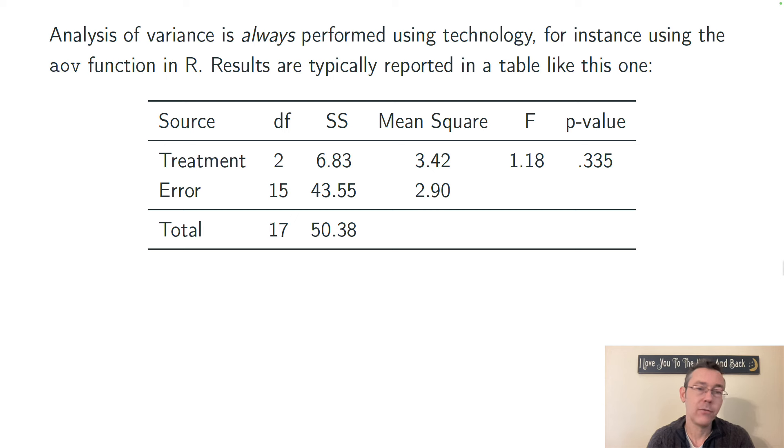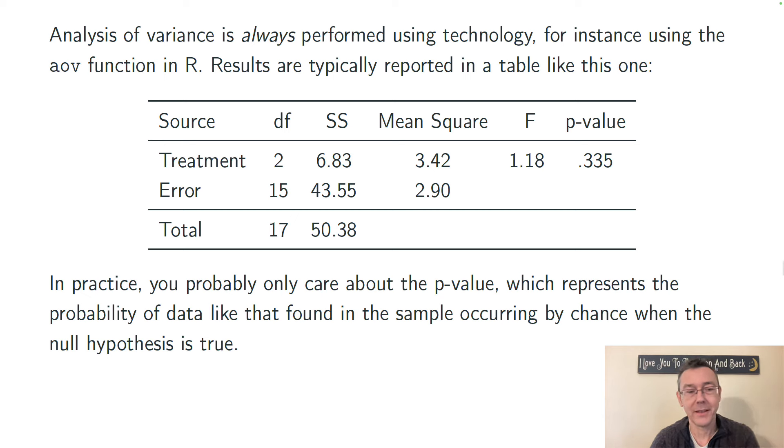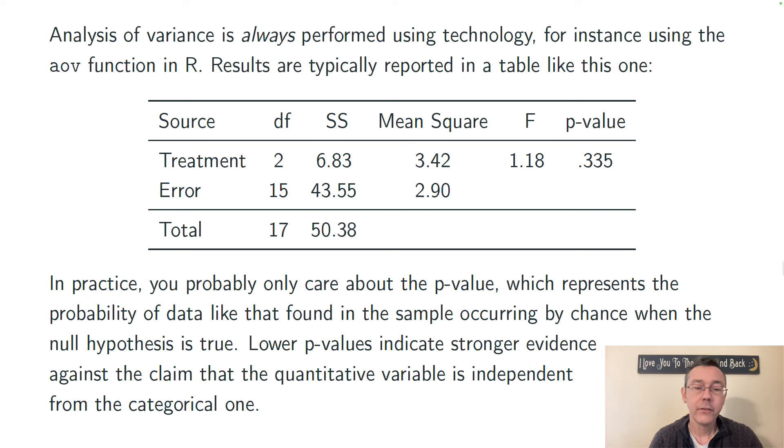And in that longer, more mathy video, I talk about what these things mean a bit more specifically. In practice, the only one you're going to care about is going to be the p-value at the end. And this is representing the probability of data like what you got in your sample occurring, by chance, when the null hypothesis is true. That is, when in the larger population, the means are the same in each of the different groups. In this case, we have a p-value of 0.335. P-values are always going to be between 0 and 1. Lower p-values indicate stronger evidence against the null hypothesis. That is, against the claim that the quantitative variable is independent from the categorical one and that the group means are the same for the quantitative variable across all the different groups. P equals 0.335 is saying that there is not strong evidence for that. We're going to say that the data is consistent with that null hypothesis and draw no further conclusions.